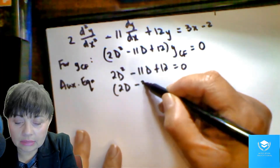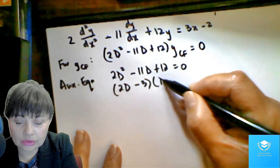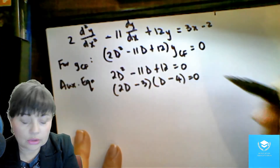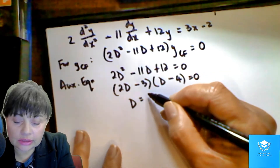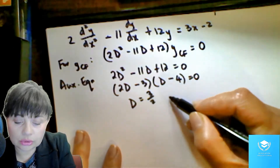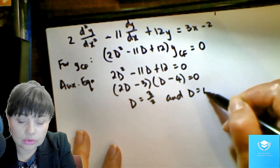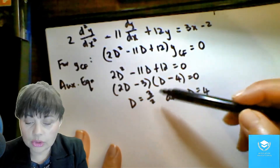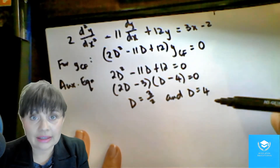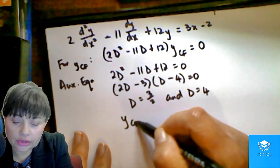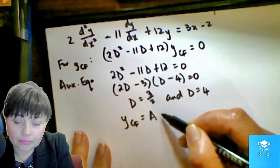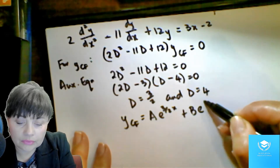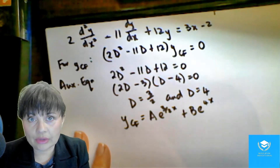It's (2D minus 3) times (D minus 4) equal to zero. That means that our solution is D equals 3 over 2 and D equals 4. So what you've got is you have roots for D which are different and real. So our solution is going to take this form.